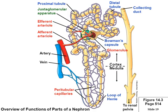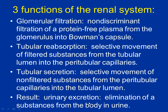The vasa recta runs right along the juxtamedullary nephrons only. When the loop is longer, it turns into the vasa recta structure. Put a star by this — you have to know it.